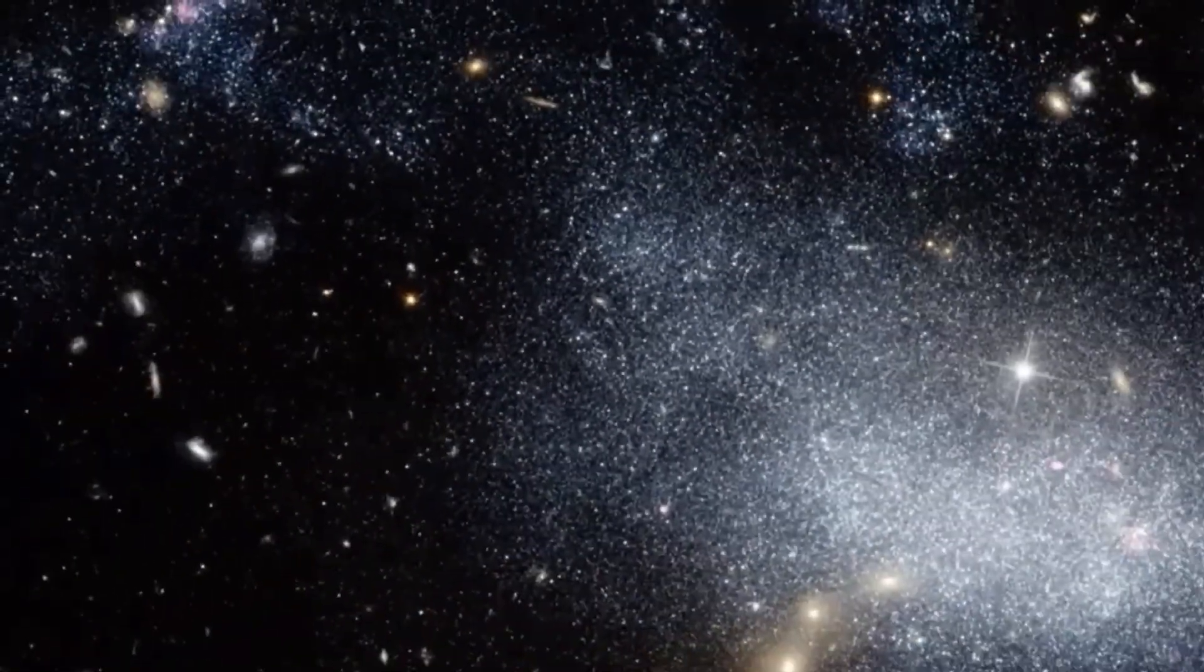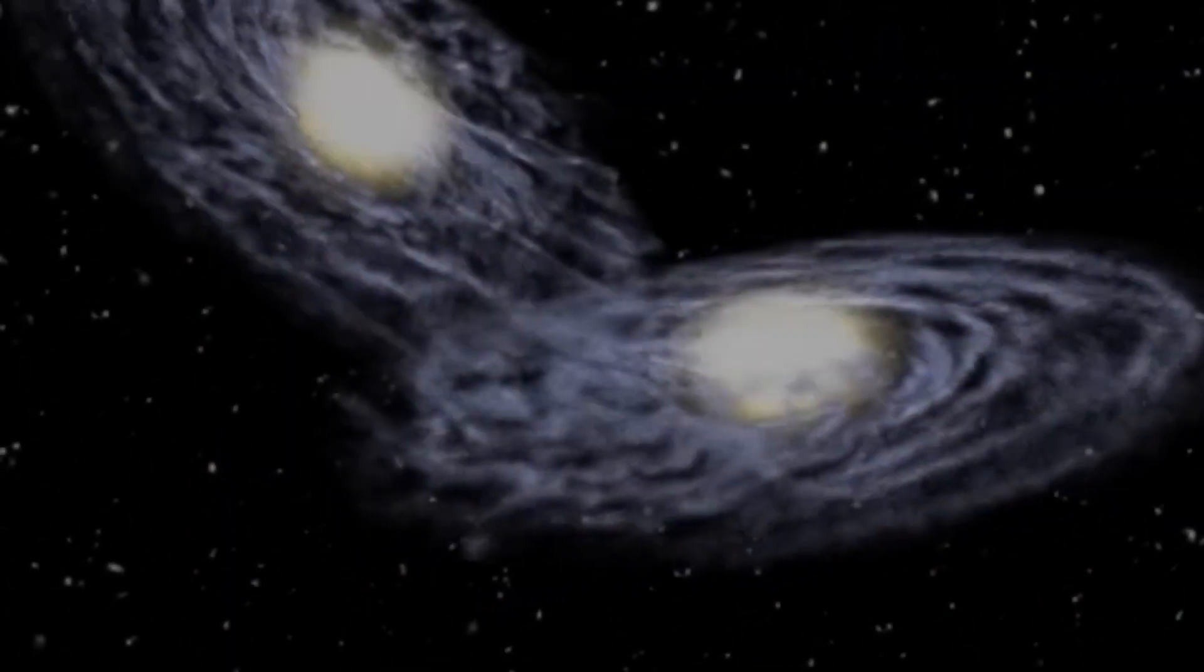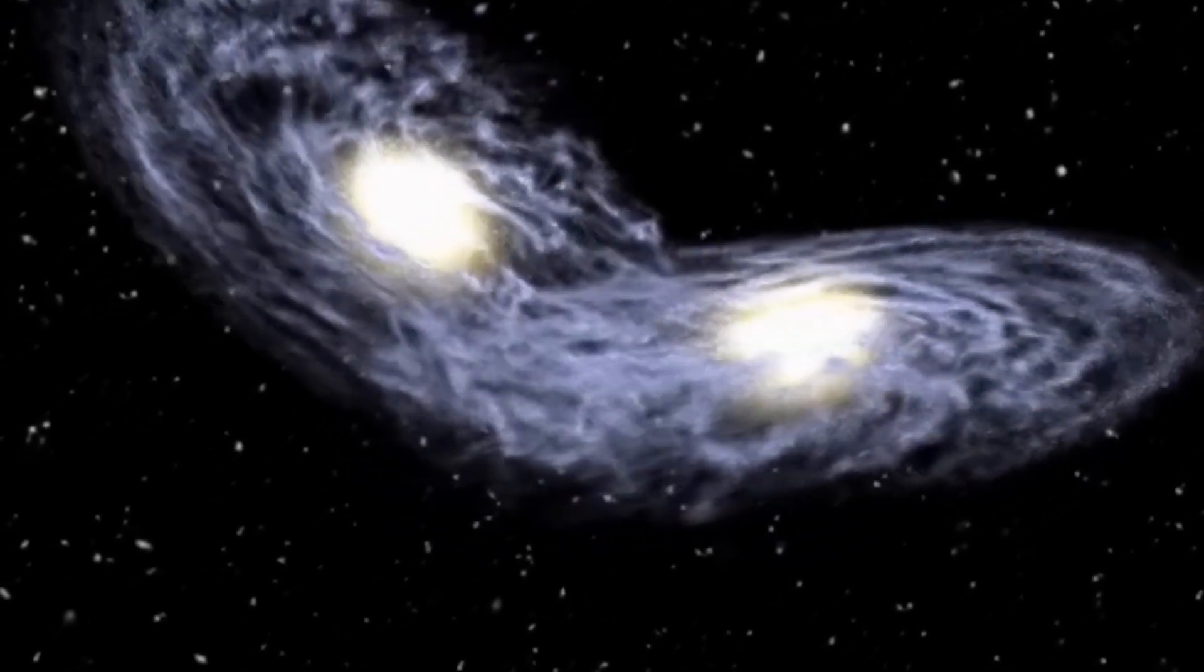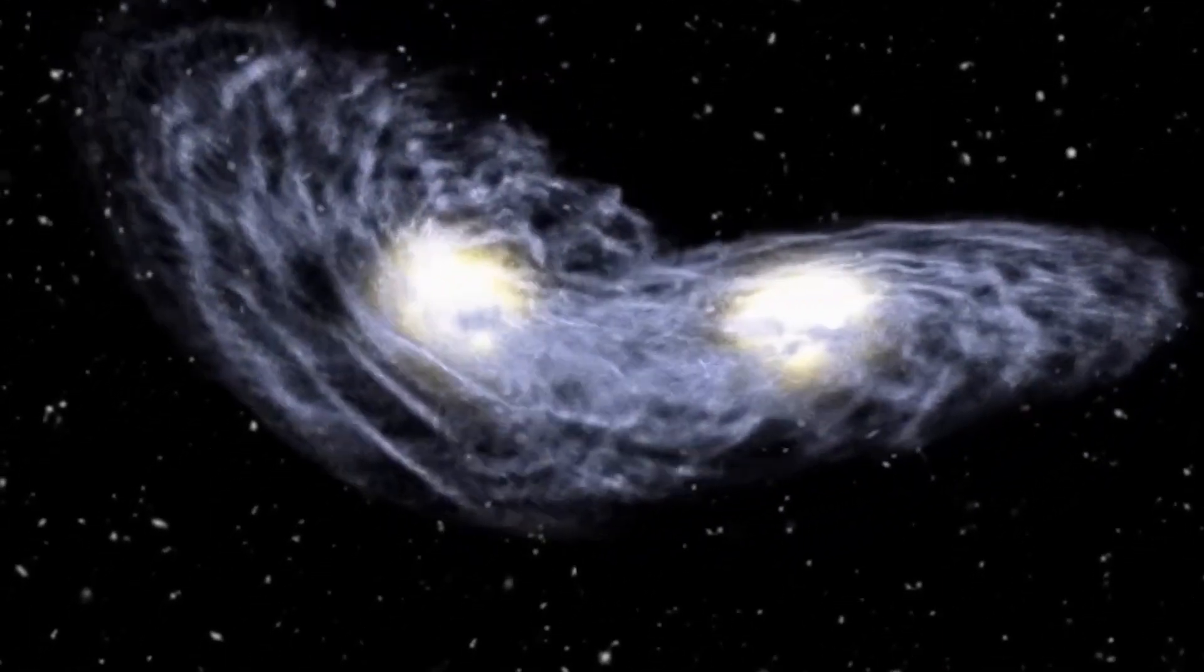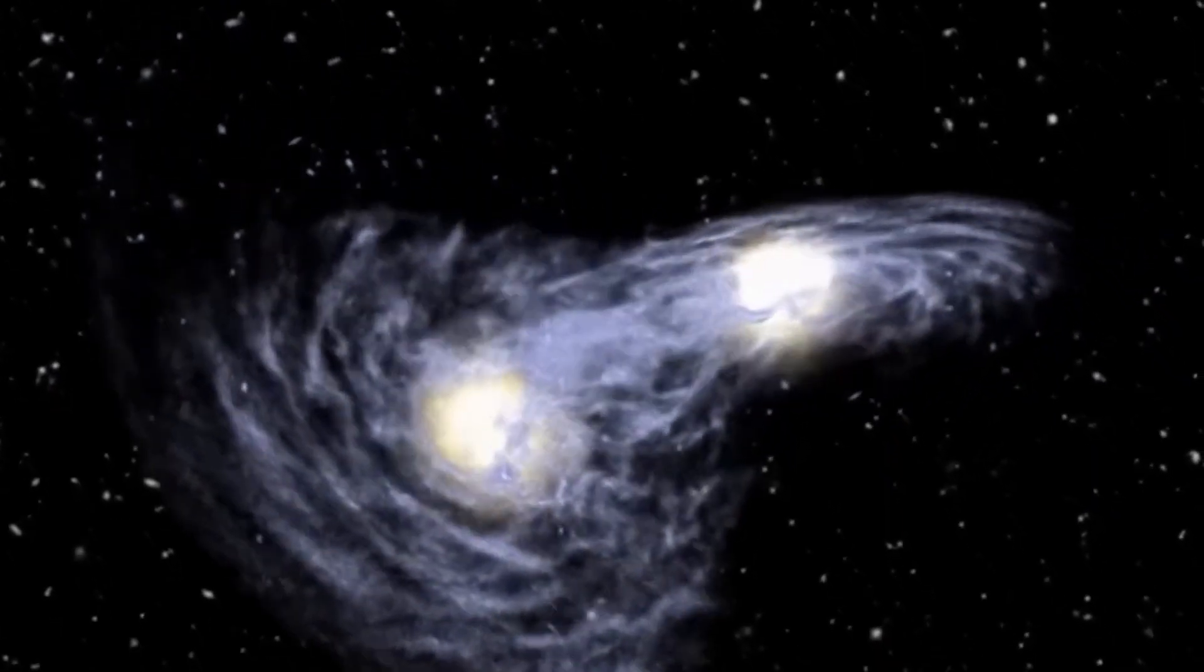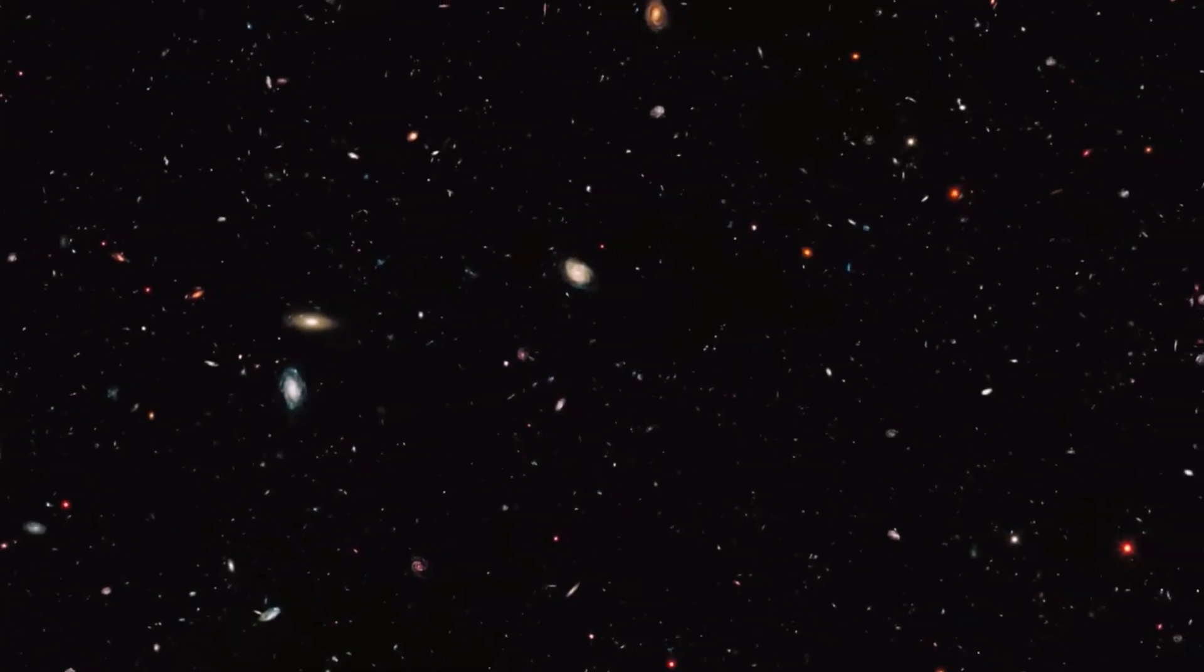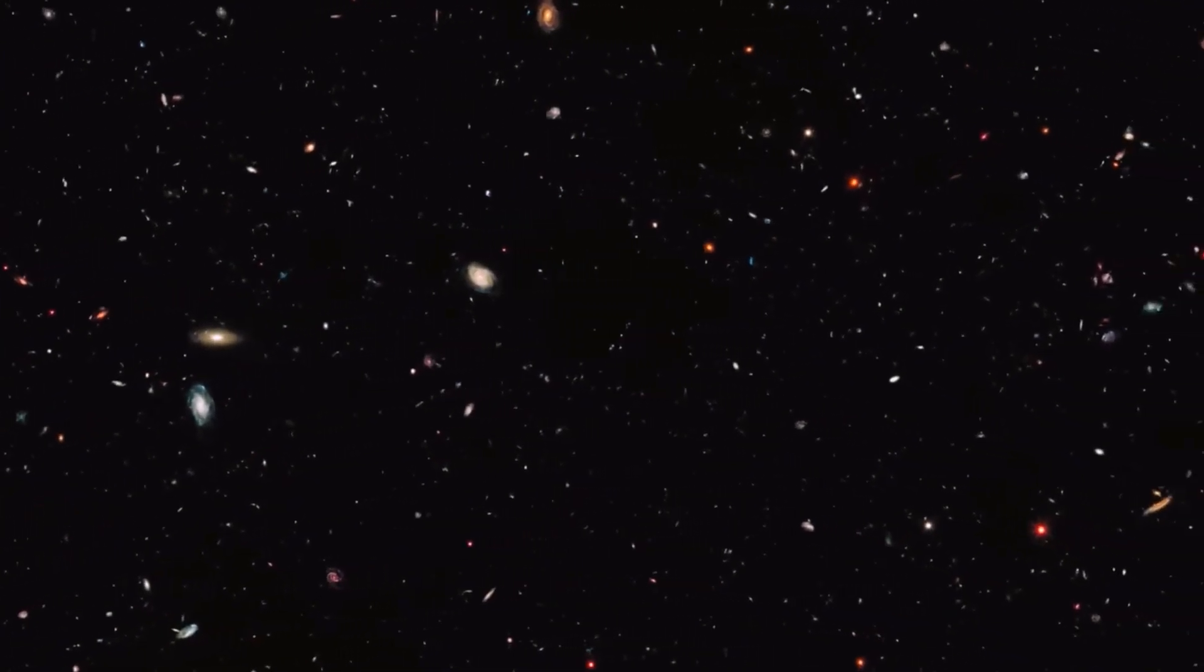It is interesting to note that these two spiral galaxies captured are close enough to each other to be interacting, which is known as galaxy interaction. The interaction between the two galaxies could have a profound effect on their evolution, potentially leading to the formation of new stars and changes in their structure.